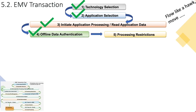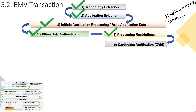Once we're happy that the card is genuine, we then go through a phase called Processing Restrictions. In this phase we establish whether the transaction itself is valid — whether the conditions present in the transaction are valid. Once we're happy with that, it's our turn to ensure the cardholder is authentic. We verify the cardholder and go through the Cardholder Verification phase. In our example it was an offline PIN that was verified by the card.